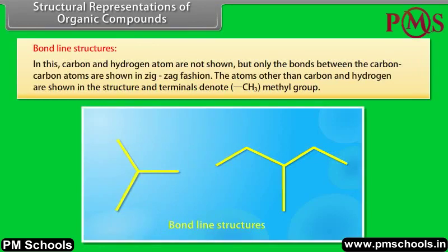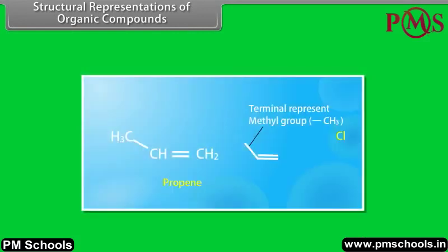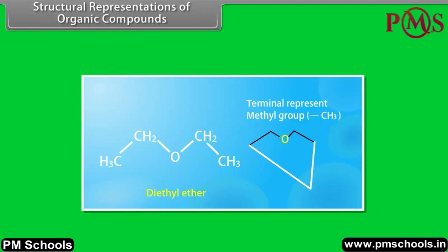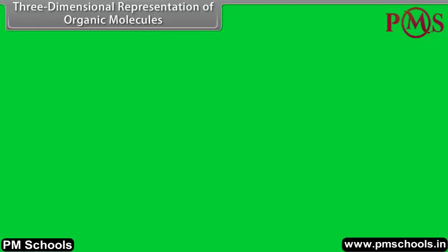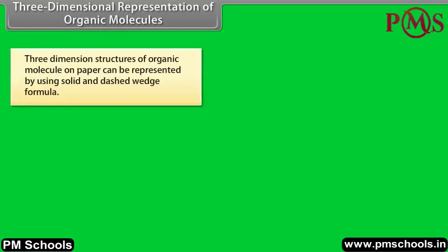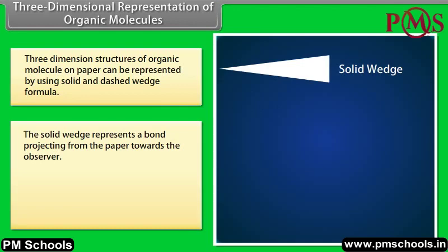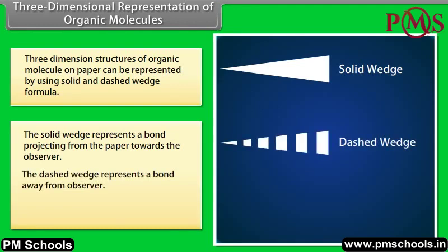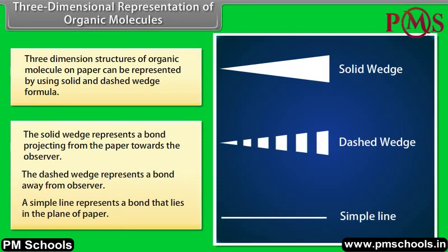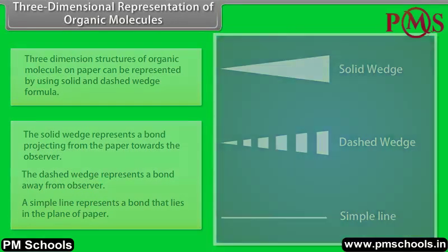In bond-line structures, carbon and hydrogen atoms are not shown, but only the bonds between the carbon-carbon atoms are shown in zigzag fashion. The atoms other than carbon and hydrogen are shown, and the terminals denote a methyl group. For example: butyl chloride, propene, cyclohexane, diethyl ether, dimethylamine. Three-dimensional representation uses solid and dashed wedge formulas. The solid wedge represents a bond projecting towards the observer, the dashed wedge represents a bond away from the observer, and a simple line represents a bond in the plane of the paper. For example, methane.